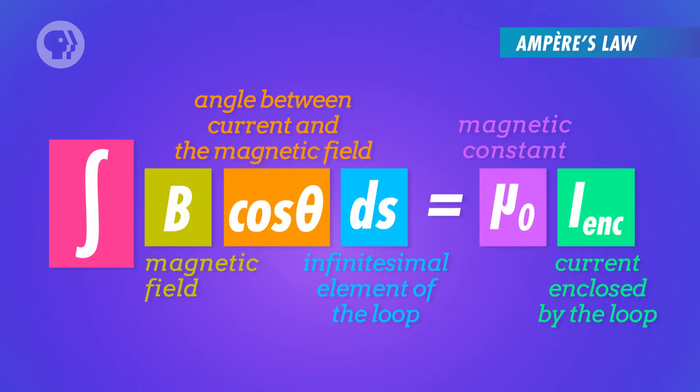But the equation he came up with, the one that we now call Ampère's law, allowed him and future physicists to figure out what B was in a lot of situations, including the case of the two parallel wires.